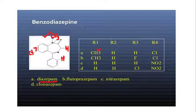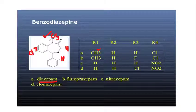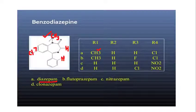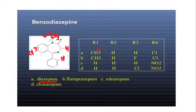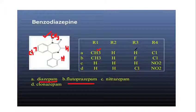When you attempt that question in the paper, you have to state that the drug's skeleton is the same as benzodiazepine — and specify which groups are at which positions. So this is what I have labeled on the whole structure, and that gives us diazepam. Now we have flurazepam. The difference between flurazepam and diazepam is only at position 3 (R3).